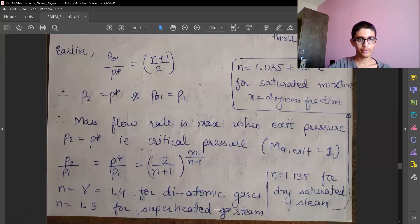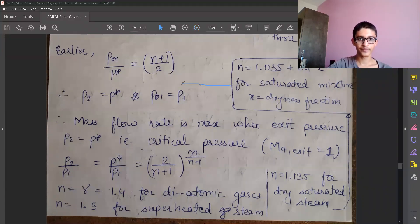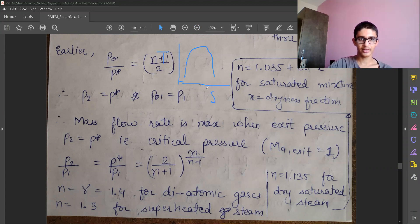So N equals gamma equals 1.4 for diatomic gases. N equals 1.3 for superheated steam. N equals 1.135 for dry saturated steam. So let me draw a diagram over here to better explain this. So this is the dome we have. This can be TS diagram, TS curve.